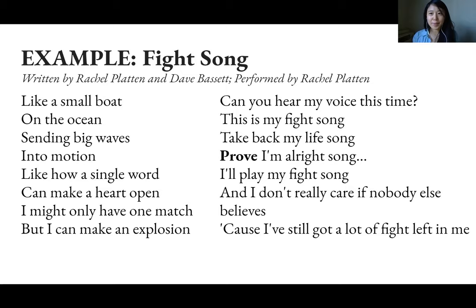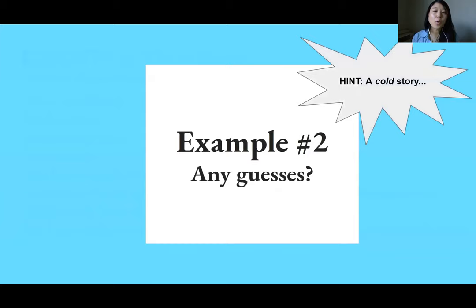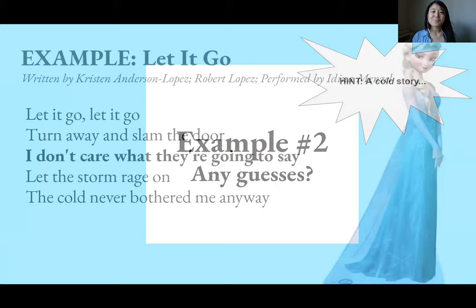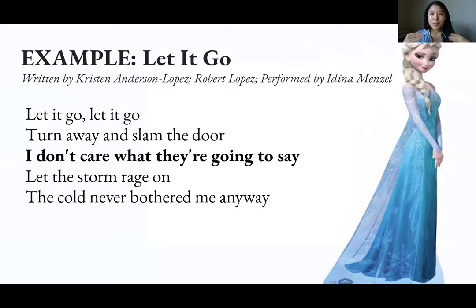Example number two — this story is a bit cold. If you guessed 'Let It Go' from Frozen, you're right. Over the course of the story, Elsa the princess is certain she's not going to be accepted for who she is. Then in the course of that song, she realizes she accepts herself for who she is — and that is a major character journey for Frozen.